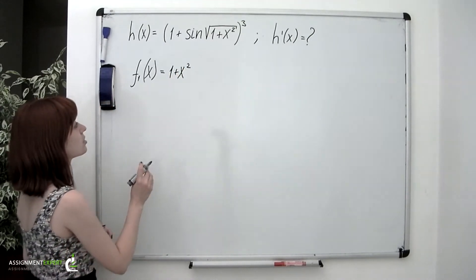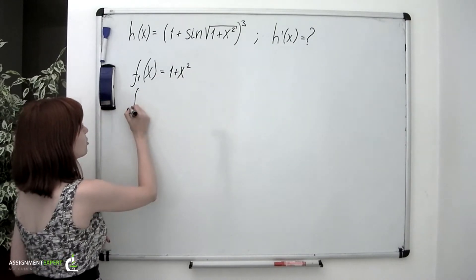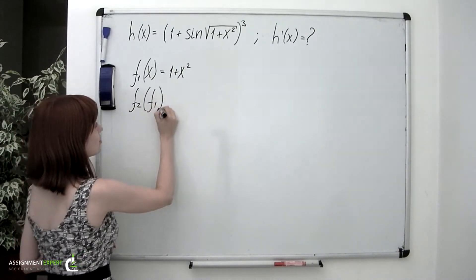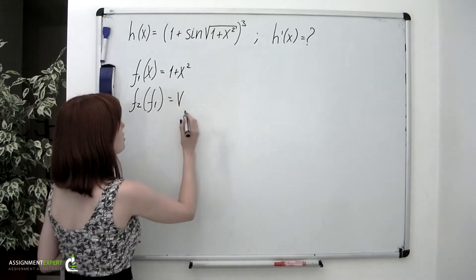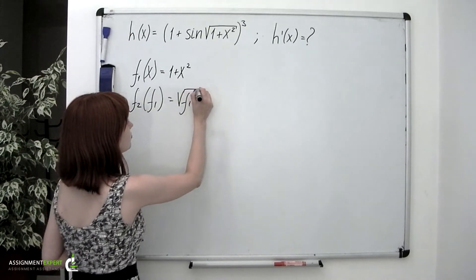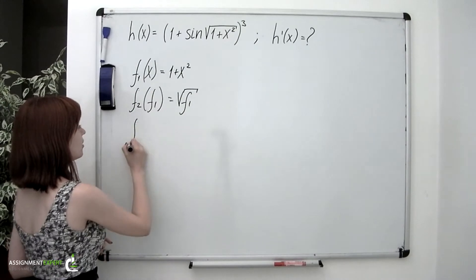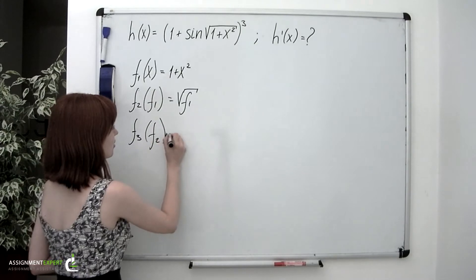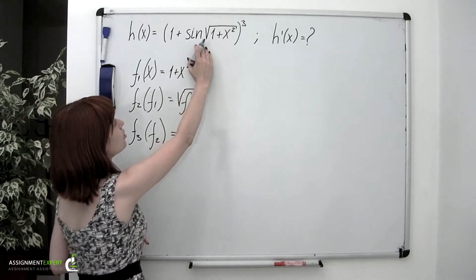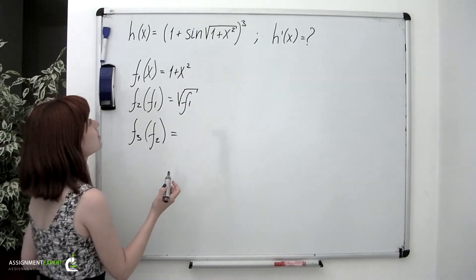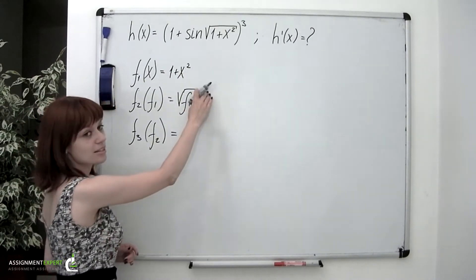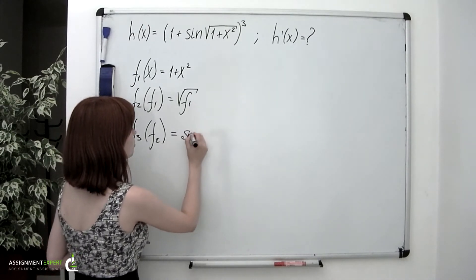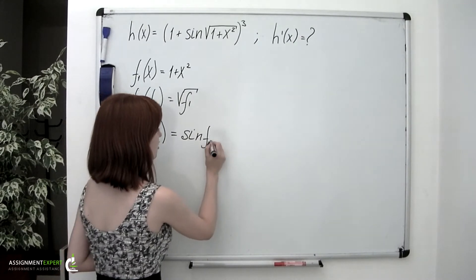Then, having obtained that result, we use the calculator one more time to find the square root of this value. So f sub 2 is the square root of f sub 1. Then f sub 3 is the sine function — we take the calculator and find sine of the value obtained in the previous step. So f sub 3 equals sine of f sub 2.